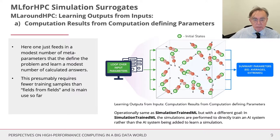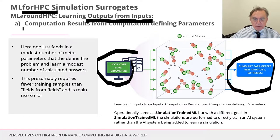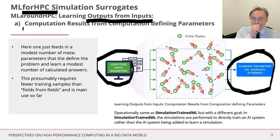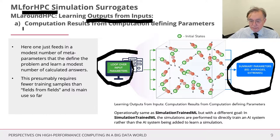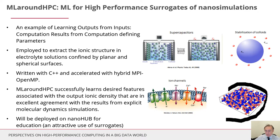Now we have the first of the surrogates, which are very important. These involve learning the output from the input. The simplest variant: you specify the input by a few parameters and get out the output summarized with averages and extreme values in a few parameters — computational results from computational defining parameters, learning outputs from inputs. We'll come to the more expansive variant later, where everything is three-dimensional fields.